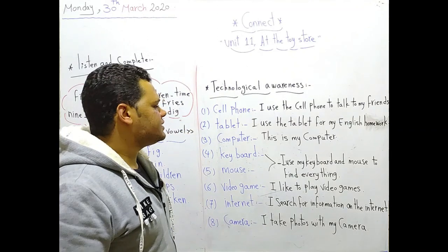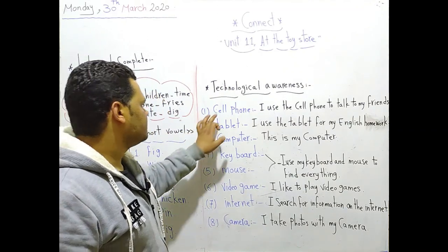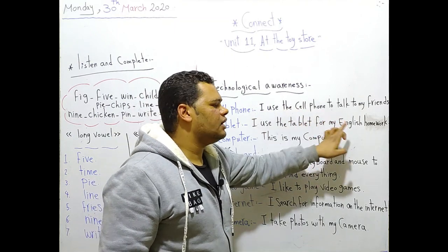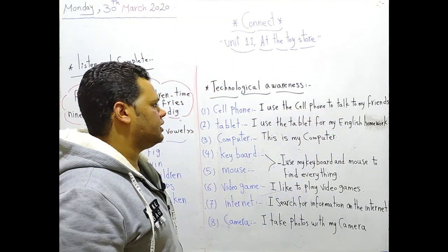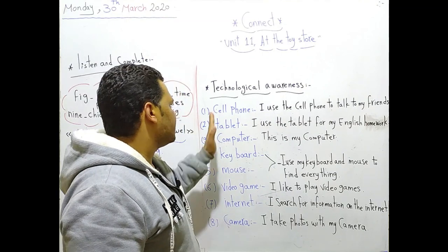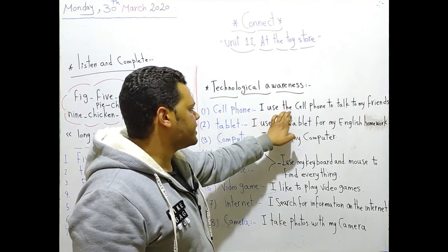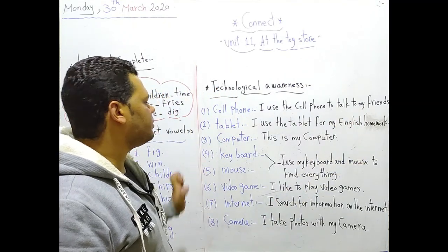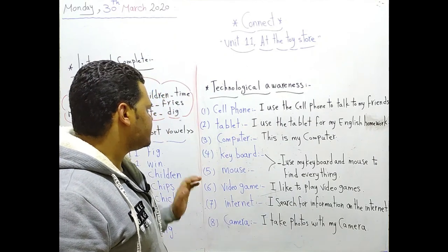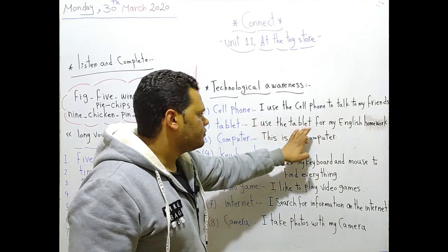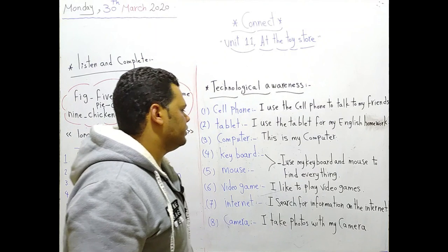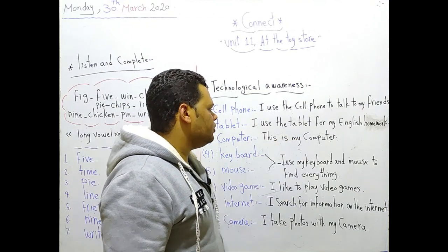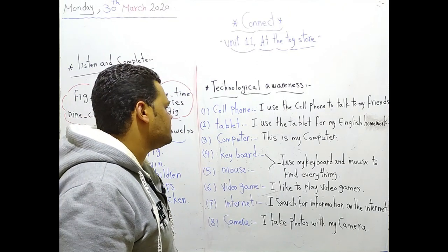Now it's time to learn some words about technology. Number one: cell phone. I use the cell phone to talk to my friends. If you want to communicate with your friend, you will use the cell phone. Number two: tablet. You know tablet, it's much bigger than cell phone. I use the tablet for my English homework. We use it to do our homework. Number three: computer. This is my computer. We all have computers. Most of us have computers at home.